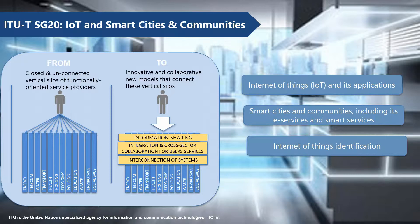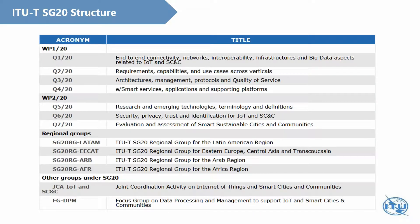Study Group 20 is the leading study group to address Internet of Things and its applications, smart cities and communities including e-services and smart services, as well as IoT identifications. This slide shows the ITU-T Study Group 20 structure. In this study period, there are seven questions under the umbrella of two working parties in Study Group 20.